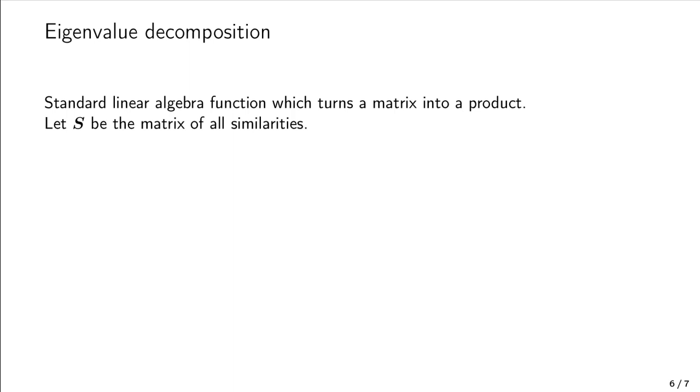In particular, let S be the m times m matrix of all our similarities sij. Then, the eigenvalue decomposition gives us a matrix V and a diagonal matrix lambda, such that S is equal to V times lambda times V transpose. We are almost there, we only need one final trick. We now define a matrix X as the square root of lambda times V. By construction, S is exactly equal to X times itself.